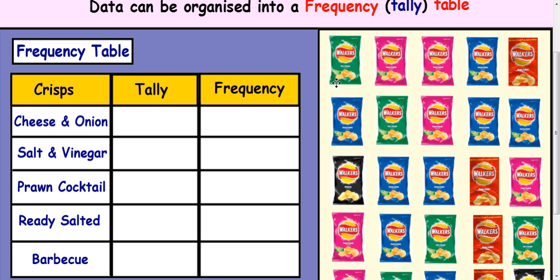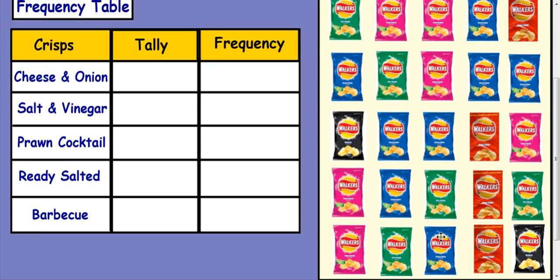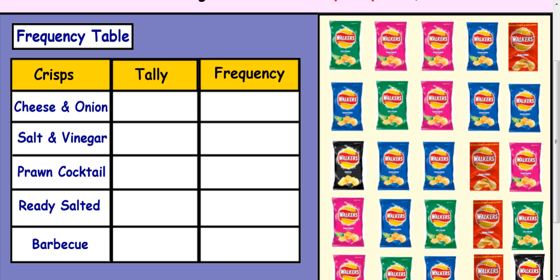Now on here if you like cheese and onion, now cheese and onion I think is blue. So if you look at the blue you'd have 1, 2, 3, 4, 5, 6, 7, 8. So you would create 8 tally marks. 1, 2, 3, 4, 5, 6, 7, 8. And then the frequency would just look like that.